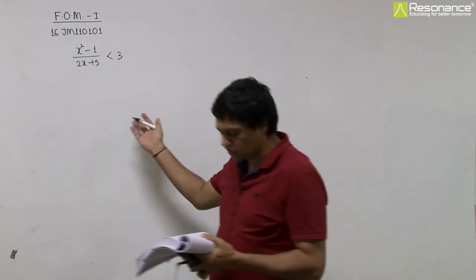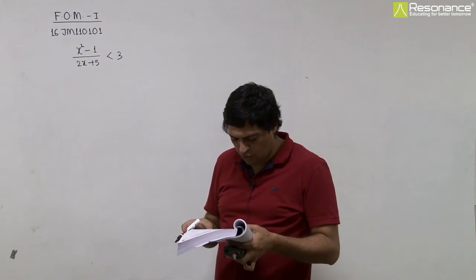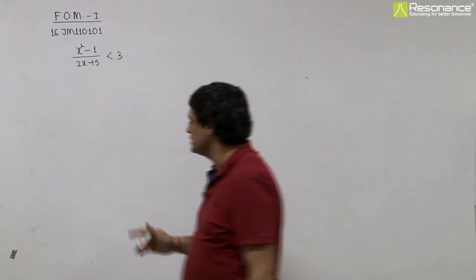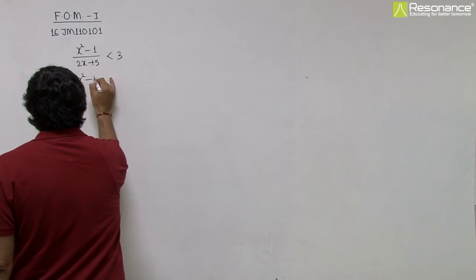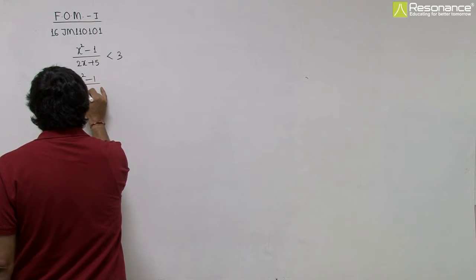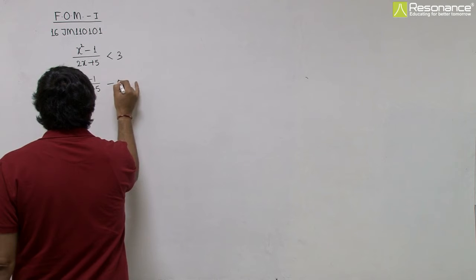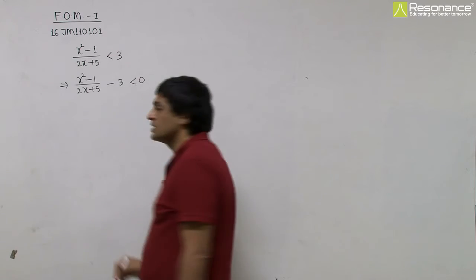So we will count how many positive integers are satisfying this inequality. We will have x square minus 1 upon 2x plus 5 minus 3 is less than 0, right?